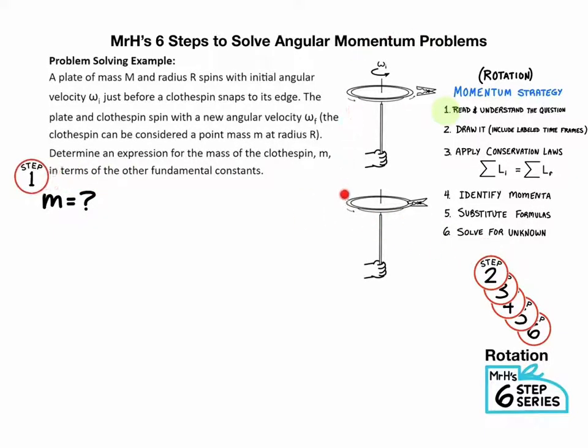Step two is to draw a picture. In this case, the diagram is already there. Step three is to apply the law of conservation of angular momentum. Step three always looks like this for angular momentum problems.